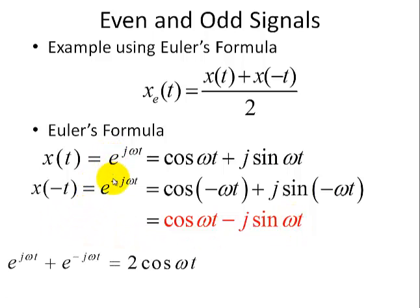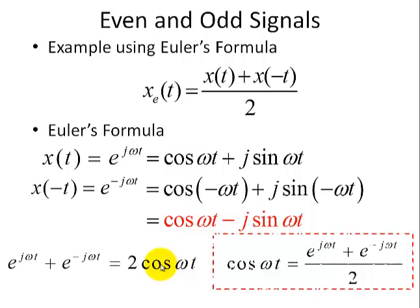Adding the two Euler equations — e to the j omega t and e to the minus j omega t — we can see that the sine terms cancel, and we add up two cosines. This gives us another form of Euler's formula: cosine omega t equals e to the j omega t plus e to the minus j omega t, divided by 2.